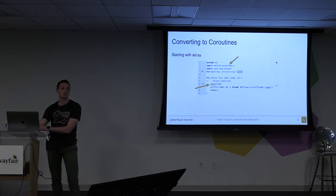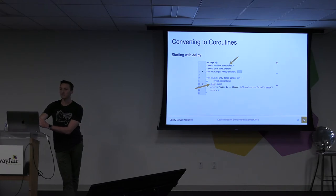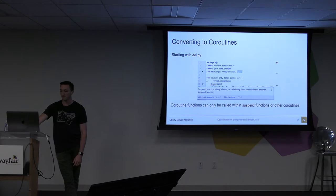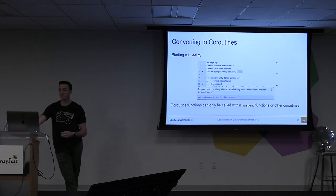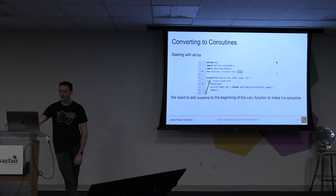Let's get started converting this to coroutines. The first thing is importing the coroutine library into our file, and we're going to replace Thread.sleep with delay — delay is just a coroutine function that does the same thing as sleep. We run into a compiler error: it's saying this needs to be a suspending function. Suspending functions allow us to run coroutines — they tell the compiler this is going to be an asynchronous function. To fix this, we simply add the 'suspend' tag to the beginning of the function.